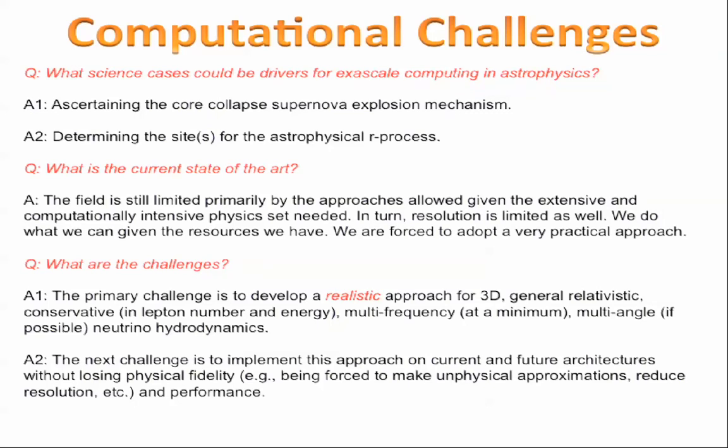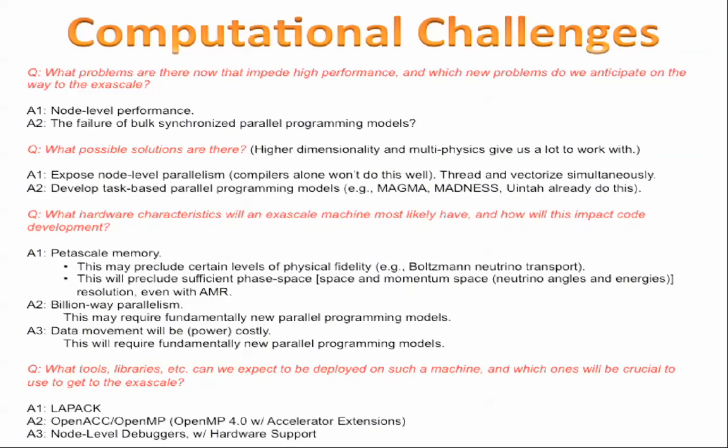One of the challenges, we have to develop a 3D realistic approach to this, including all of the physics. And that is one that's conservative for lepton number and energy simultaneously. All of this, as the literature on the subject details, is extremely difficult to do. And then obviously, once we've developed this realistic physical approach, we have to develop an instantiation of that approach on these platforms that can make use of these platforms optimally to get to the science we need. Okay, so what problems are there now that impede performance, and which new problems do we anticipate on the way to the exascale?